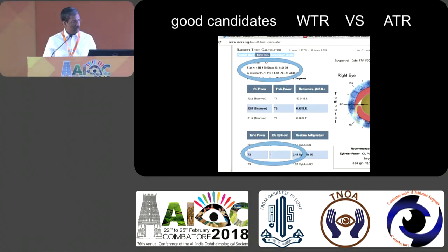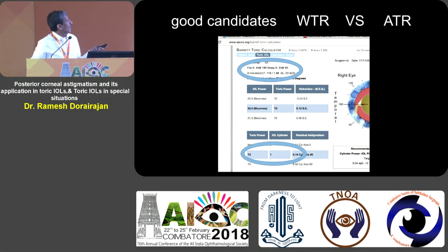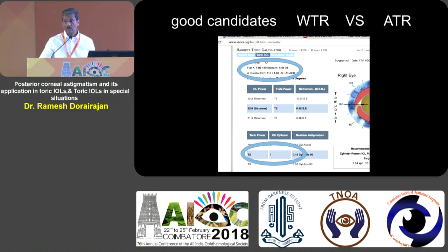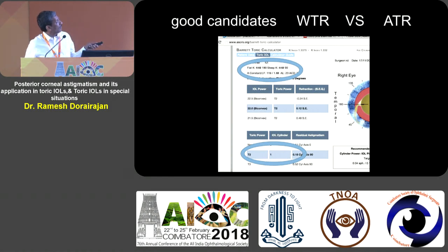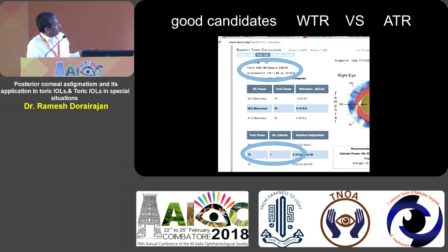I would like you to see this Barrett toric printout. Here the K1 is 44 and K2 is 44 — a measurement of the anterior cornea done with auto-K, manual K, IOLMaster, Pentacam, or whatever you are using. If you have a front surface which is perfectly spherical — 44/44 — and you put it into the Barrett online calculator, which is free and online, it will advise you to put a toric lens T2 power, which has a one-cylinder power inside the bag.